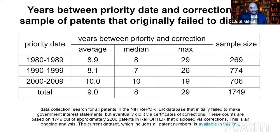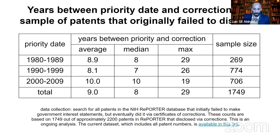The other problem is that Certificates of Corrections tend to happen very late — several years after the patent has been initially filed. The data I've been working on recently shows that indeed, Certificates of Corrections disclosing government interest tend to happen on average about nine years after the patent application was initially filed. So if the purpose of having this government interest statement is a better understanding of the rights and role of the U.S. government, and we never know or know very late, then the public interest is not being served appropriately when these disclosures are made through Certificates of Corrections.